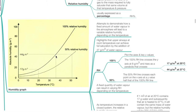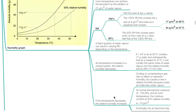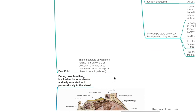The 50% relative humidity line crosses each point on the x-axis at a y-value half that of the 100% RH line. A fixed quantity of water vapor can result in varying relative humidity depending on the temperature. As temperature increases in a closed system, the relative humidity decreases. If the temperature decreases, the relative humidity increases. The dew point is the temperature at which the relative humidity of air exceeds 100% and water condenses out of the vapor phase to form liquid.